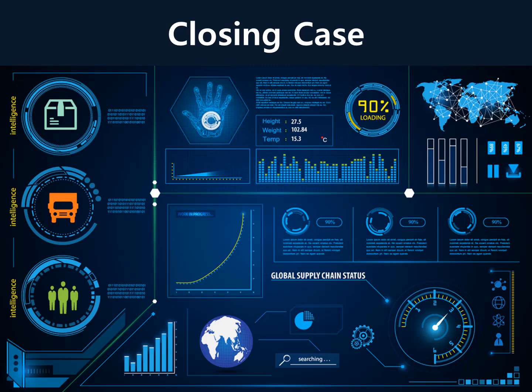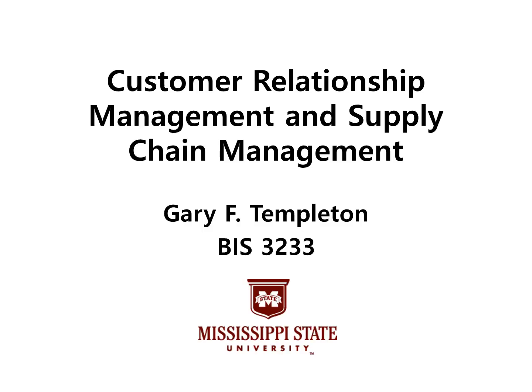In the chapter closing case, Super Retail Group addressed the issues resulting from its growth in sales volume and brand strength by implementing an SCM system. Super Retail Group used a pilot approach to system implementation. This concludes Chapter 11.